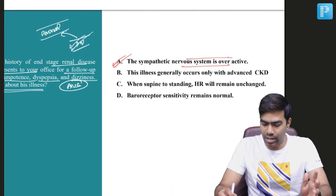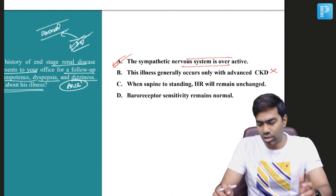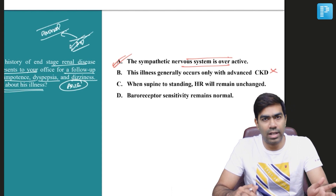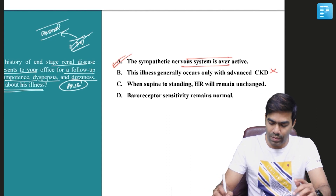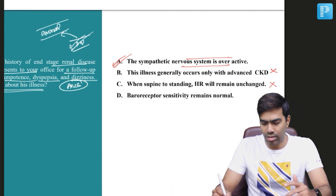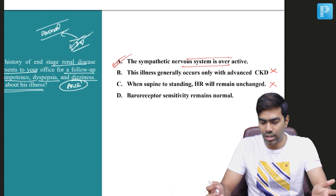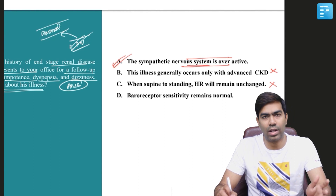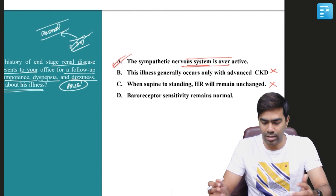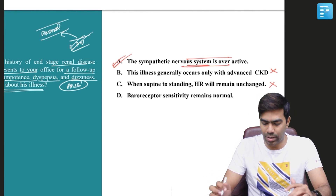What about option B? The illness generally occurs only in patients with advanced CKD — not correct. Even in early CKD this can happen. Option C states that when supine to standing, heart rate will remain unchanged — that is also incorrect. That generally indicates chronotropic incompetence or sympathetic incompetence. Here the patient's sympathetic nervous system is overactive, so they can have excessive tachycardia — the heart rate will change and they can have more tachycardia than expected.